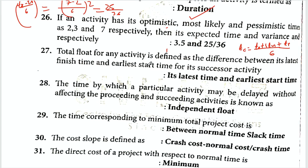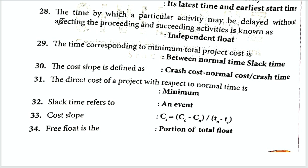Total float for any activity is defined as the difference between its latest finish time and its earliest start time. Independent float is the time by which an activity may be delayed without affecting preceding or succeeding activities.